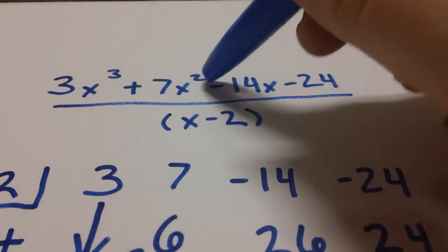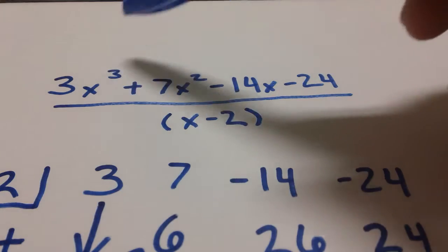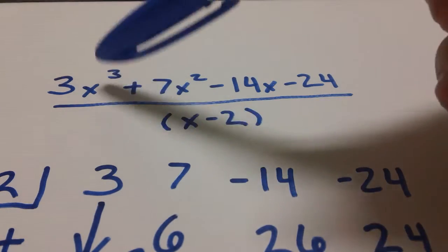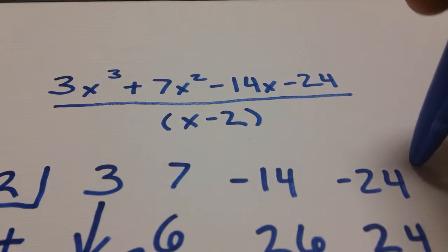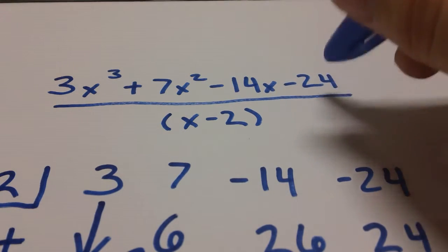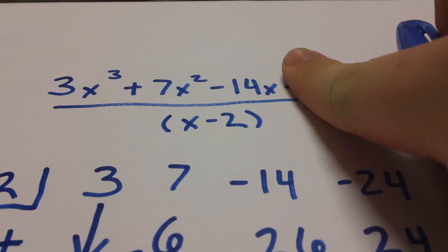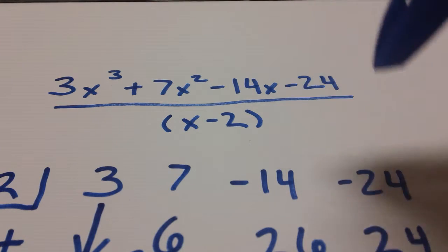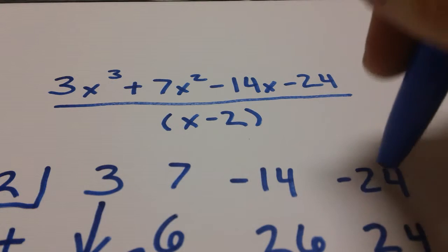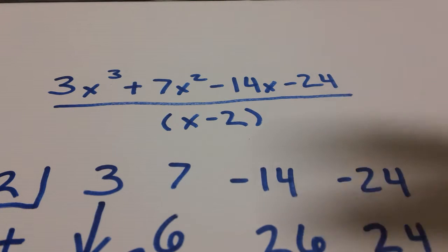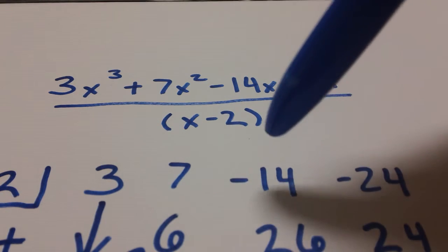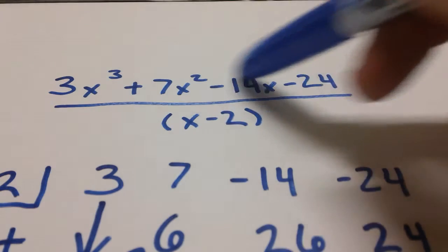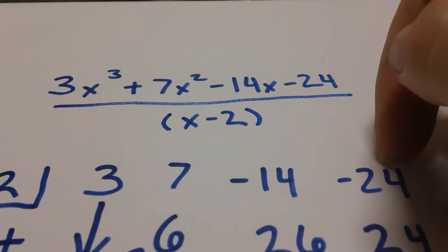Now this doesn't just go for x squared. This goes for any given power that you're missing all the way through. So if you're missing x to the second or maybe you're missing just x, even if you are missing the constant, even if the equation stopped after that minus 14x, we would still put a zero there because that constant is an integral part of our polynomial. So always remember to put a zero in place of a missing term in our original problem.